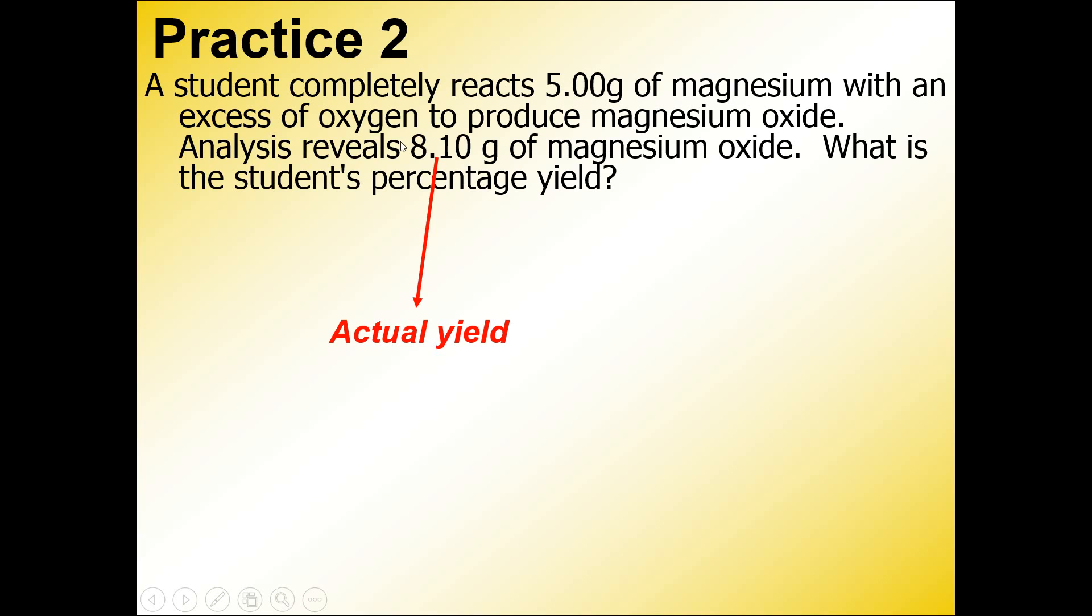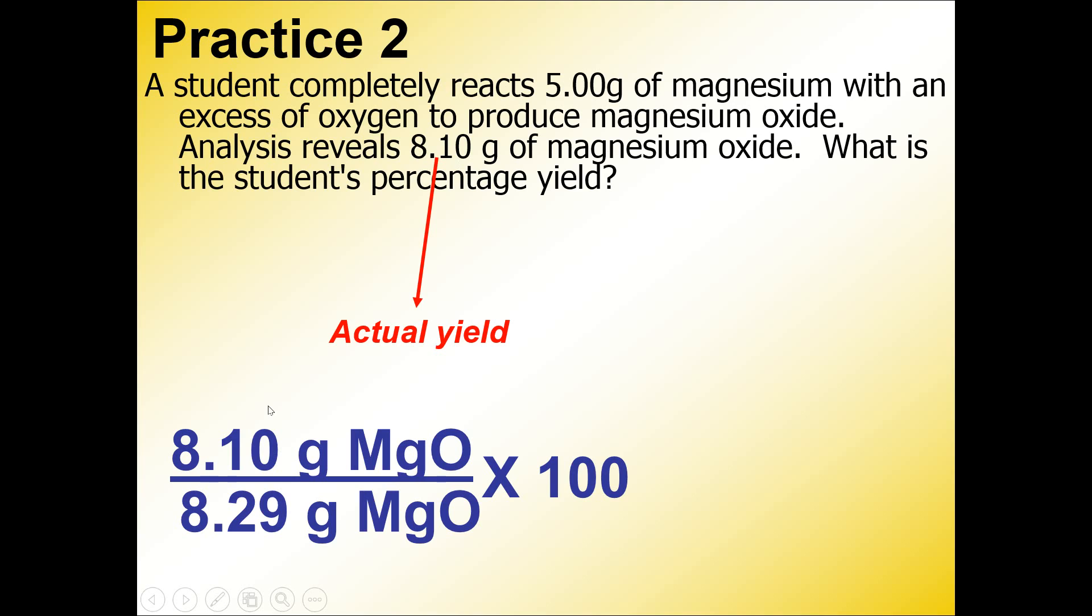But things don't always go perfectly. This student actually got 8.10 grams of magnesium oxide in the experiment. When you do the calculation, 97.7% was recovered, which is actually really good—a really high percent yield. Although we expected 8.29 grams and got 8.10 grams, we still recovered a lot of the product. Pretty good scientist here!